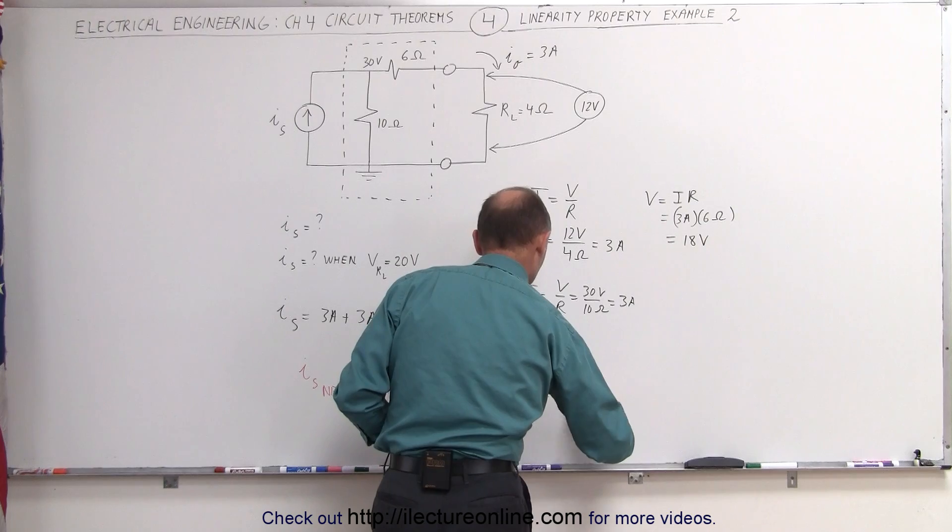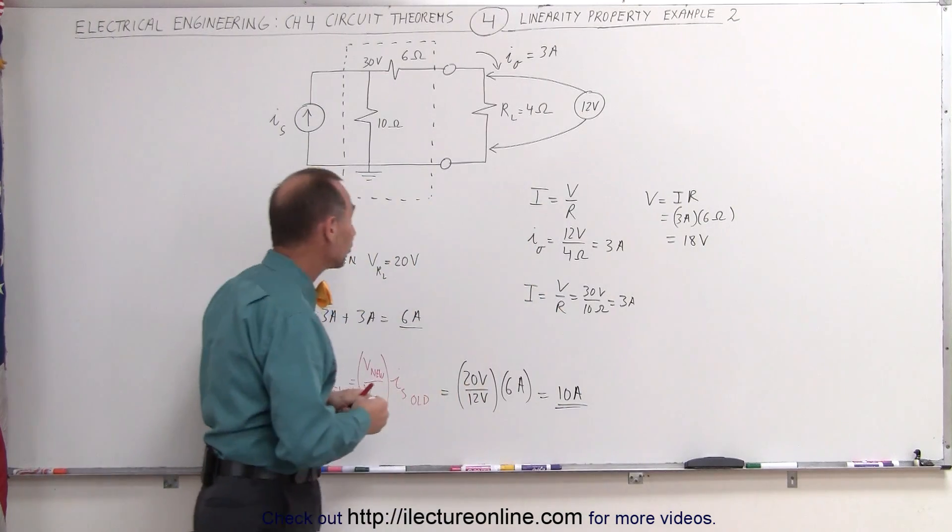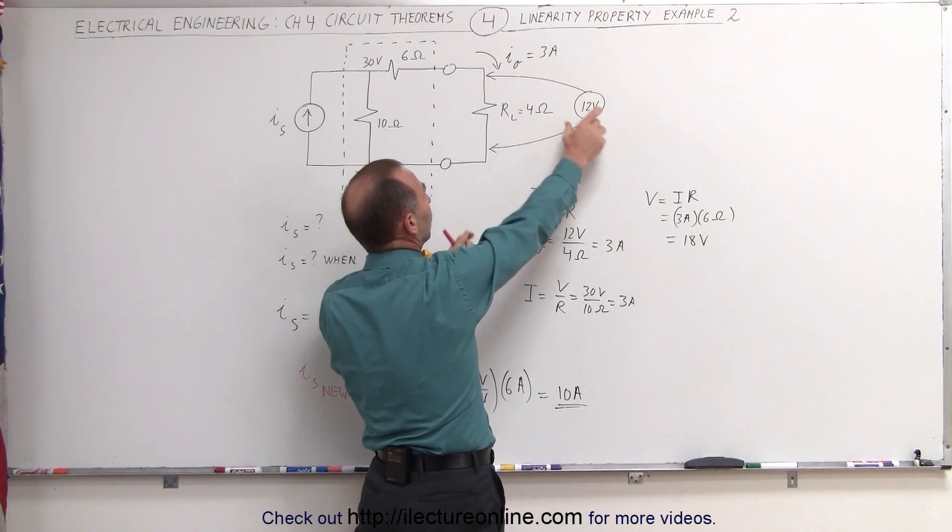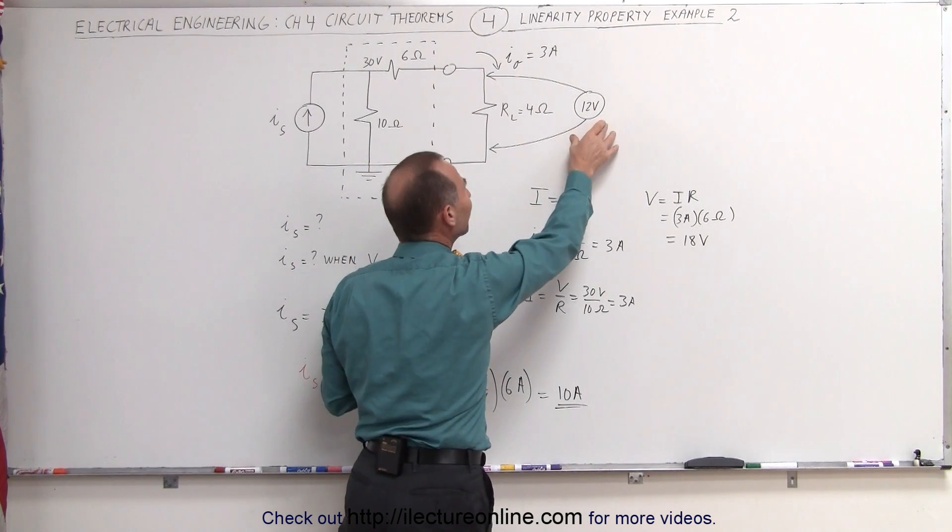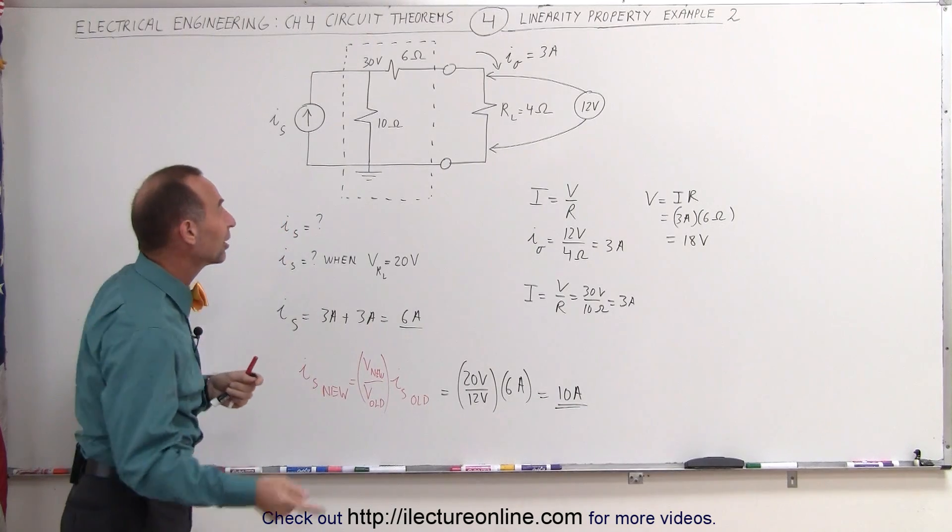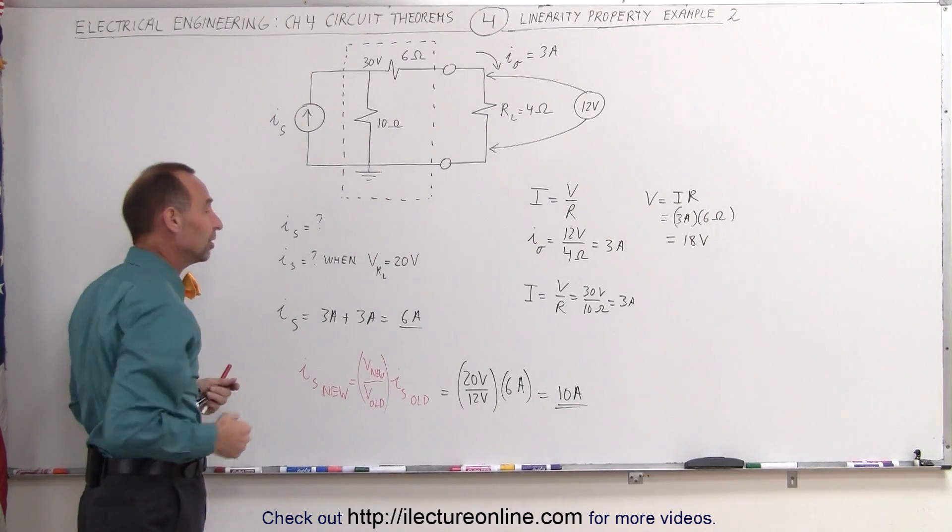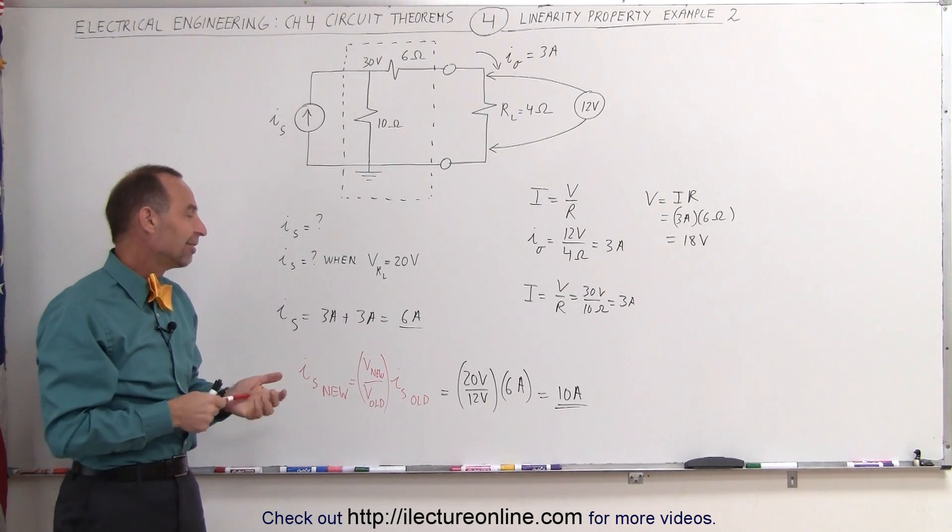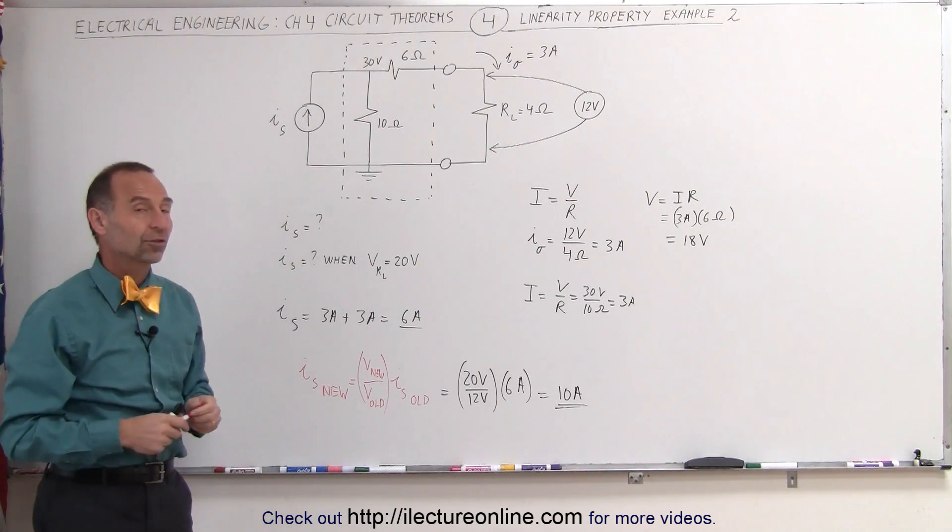10 amps. That would be the new current driving the circuit. If you go and measure the voltage across the load resistor, the load resistor, and you measure it to be 20 volts instead of 12 volts, you could then assume that the current has increased proportionally. The proportional increase would then be 10 amps instead of the 6 amps on the current source.